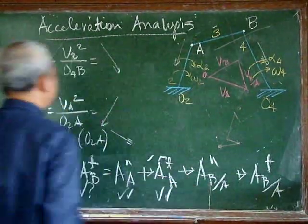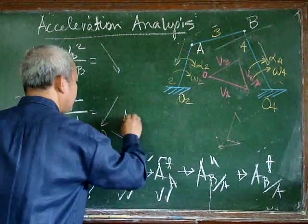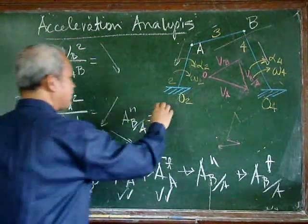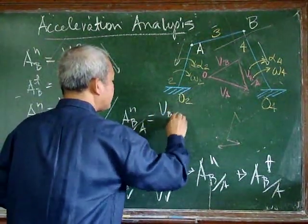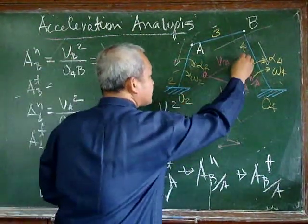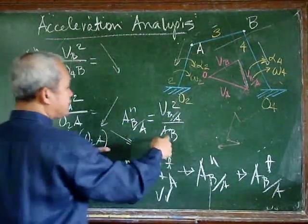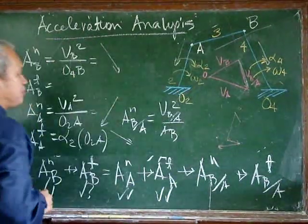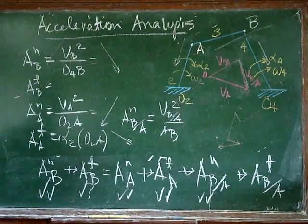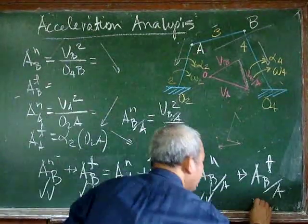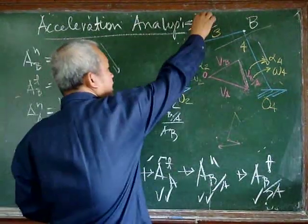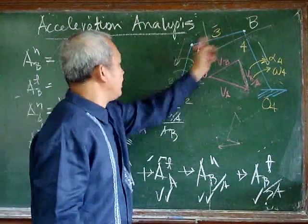The normal acceleration of B with respect to A can be derived from the velocity of B with respect to A squared over AB, where AB is the link length. We know the direction and magnitude, so it gets two checks. The tangential acceleration of B with respect to A has known direction — perpendicular to AB — but unknown magnitude, so it gets one check.